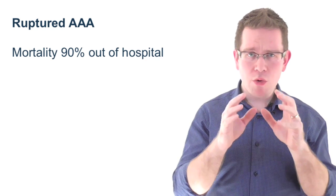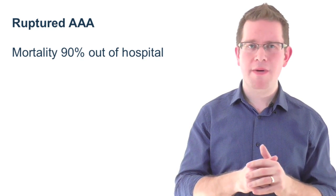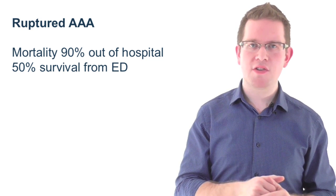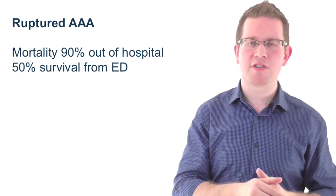When patients present with a ruptured aneurysm, it's a true surgical emergency. Overall, the mortality rate for an out-of-hospital rupture is up to 90%. However, once the patient reaches the emergency department, there's a 50% chance of survival. So, as the junior posted to cover emergency admissions, how are you going to deal with such a scenario?